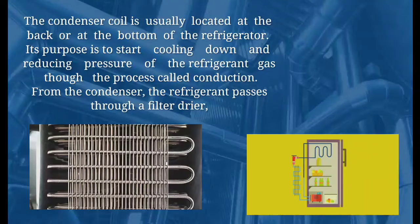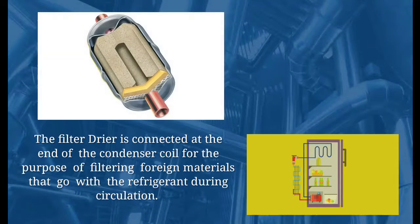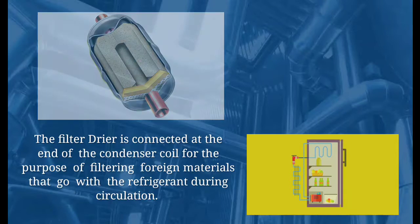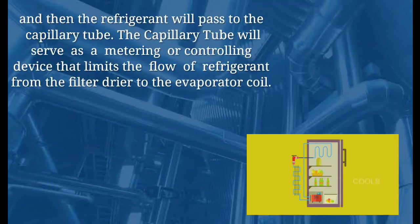From the condenser, the refrigerant passes through a filter dryer. The filter dryer is connected at the end of the condenser coil for the purpose of filtering foreign materials that go with the refrigerant during circulation.